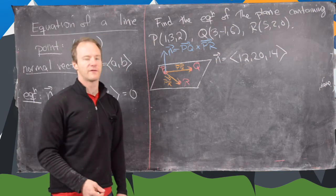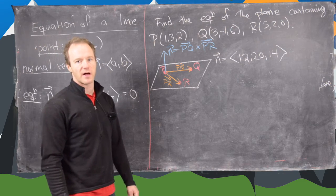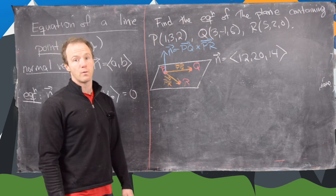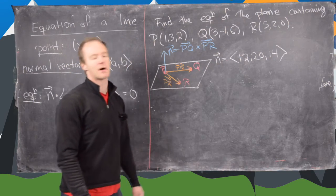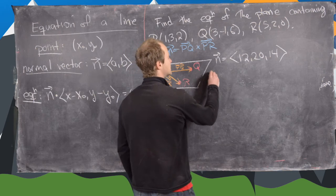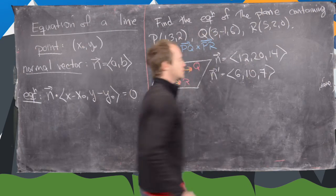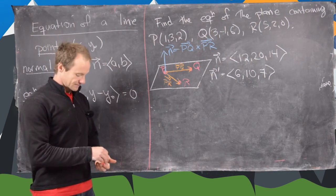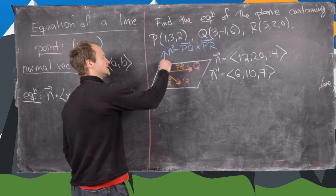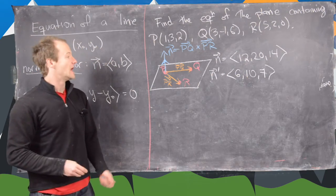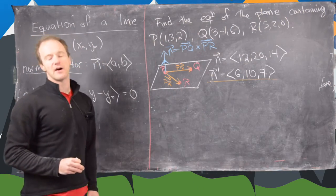On the previous board we calculated the normal vector N to be (12, 20, 14), which is orthogonal to our plane. We can scale it any way we want and still have a vector orthogonal to the plane. There is a greatest common factor of 2, so let's rename this N-prime = (6, 10, 7). Since N is orthogonal to our plane, N-prime is also orthogonal to it. Now we'll write an equation of the plane using this normal vector and one of the three points — I'll choose R = (5, 2, 0) because it has a 0 in it.